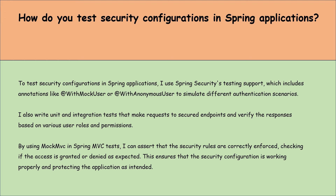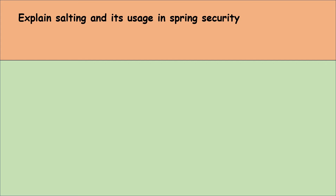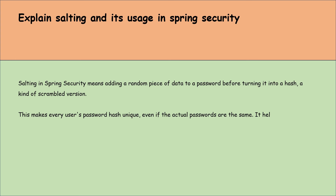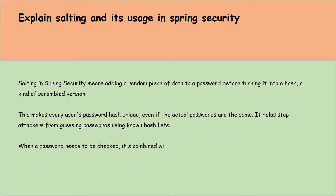Explain salting and its uses in Spring Security. Salting in Spring Security means adding a random piece of data to a password before turning it into a hash. This makes every user's password hash unique, even if the actual passwords are the same. It helps stop attackers from guessing passwords using pre-computed hash lists. When a password needs to be checked, it is combined with its salt, hashed again, and then compared to the stored hash to verify correctness. This way, the security of users' passwords is greatly increased.